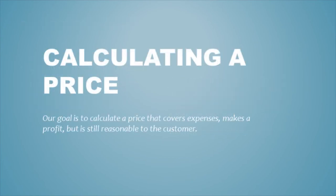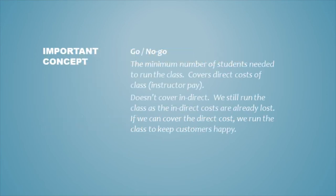Now let's look at calculating the price. Our goal is to calculate a price that covers expenses, makes a profit, but is still reasonable to the customer. The first important concept is the go-no-go number — the minimum number of students needed to run the class. This covers direct costs like instructor pay, but not indirect costs. If we make our go-no-go number, we will run the class because we cover the instructor's pay. The indirect costs have already been spent and are already lost. If we cover the direct costs, we will run the class to keep the customer happy.